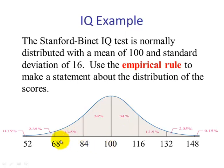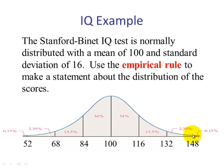If we go two standard deviations, that's minus 16 twice. So 100 minus 32 is 68. And if we go two above, that's 32 plus 100, which is 132 — this will contain 95%. If we go one more standard deviation in each direction, we expect 99.7% of the scores to be within 52 to 148.